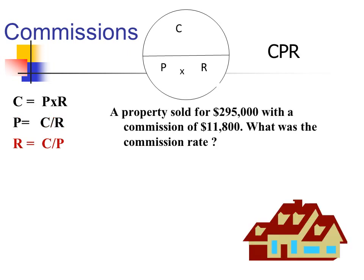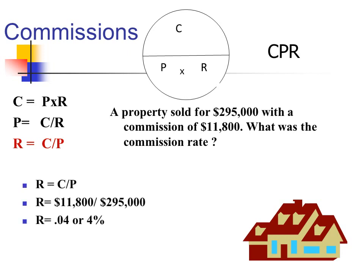And lastly, let's do a rate problem. A property sold for $295,000 with a total commission of $11,800. What was the commission rate? R is C divided by P. So we fill in the blanks: C is $11,800, P is $295,000, and we get 0.04 or 4%.